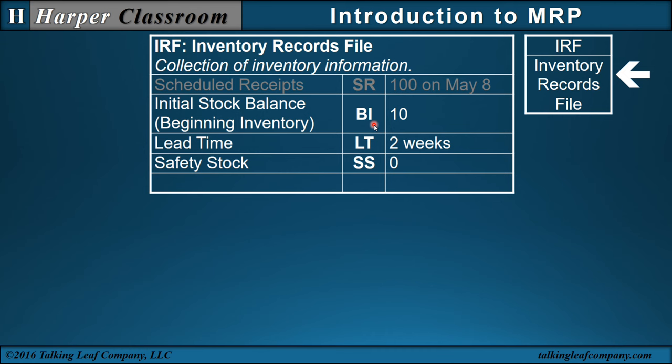The next information is the initial stock balance — the beginning inventory of 10. The lead time is the time between when you place an order and receive an order. Safety stock is the amount of inventory you carry to guard against stock-out.